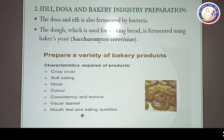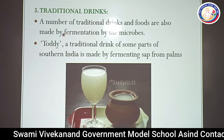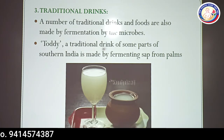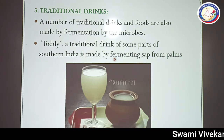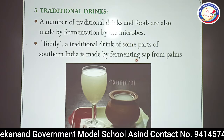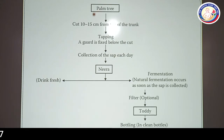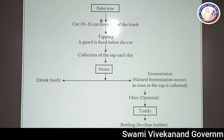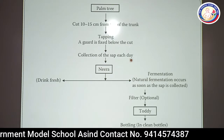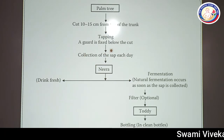A number of traditional drinks and foods are also made by fermentation. Toddy, also known as thadi, is a traditional drink of some parts of southern India made by fermenting sap of palm plants — it is an alcoholic drink used in coastal areas. To prepare toddy, cut 10–15 cm from the top of the trunk of a palm tree, fix a guard below the cut, and collect the sap each day — which may yield 70 to 100 liters. This collected sap is known as neera.